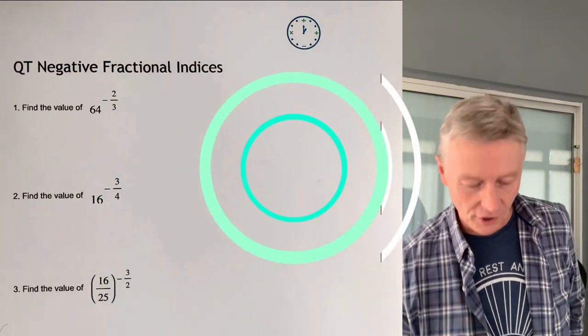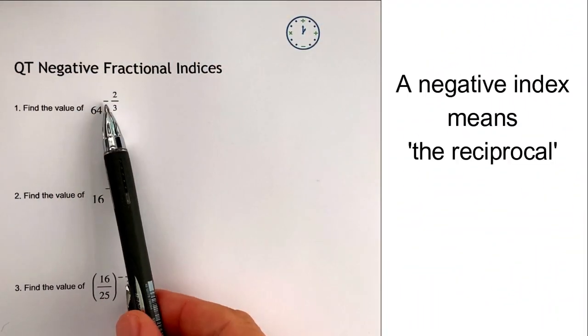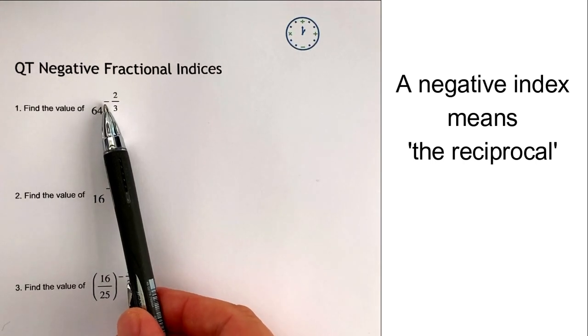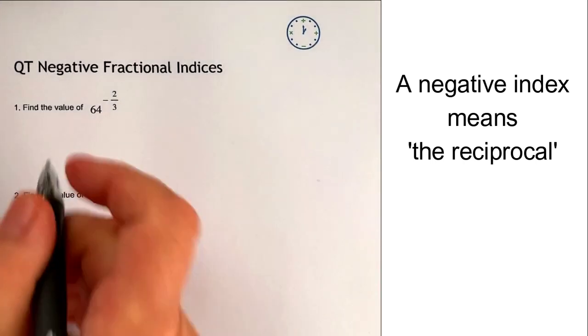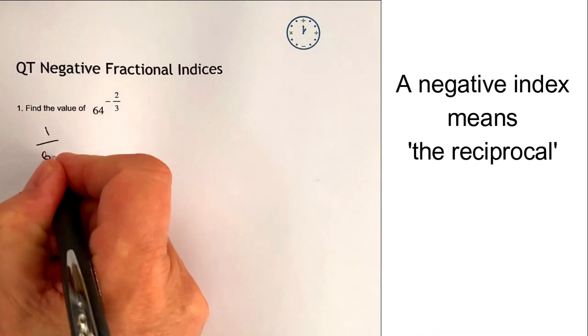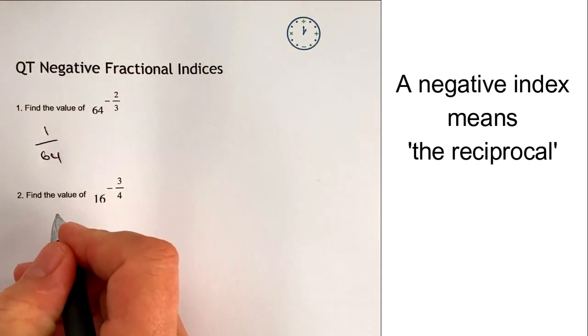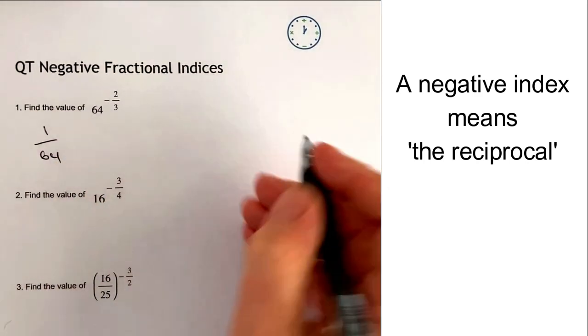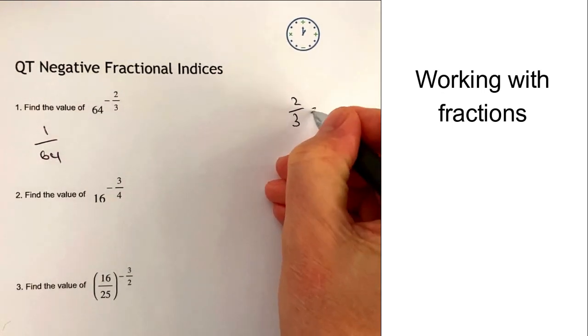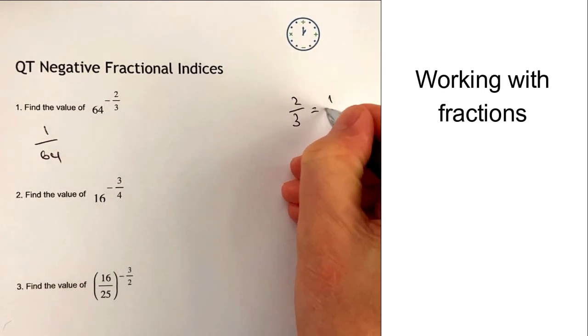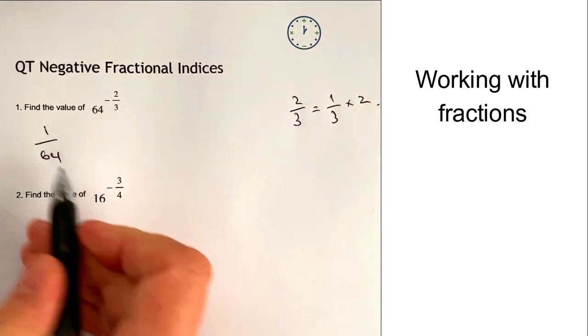So the first one is that we've got a minus sign here, and what that basically means is the negative reciprocal. So I'm going to write that as 1 over 64. Then I've got to recognize that 2 over 3 is exactly the same as saying 1 over 3 multiplied by 2.